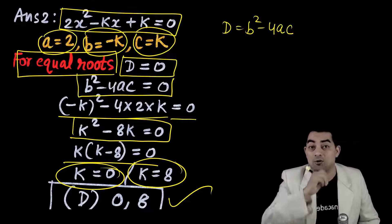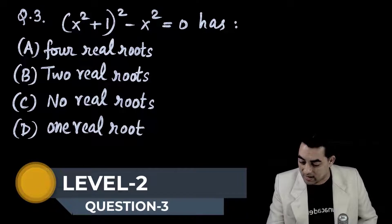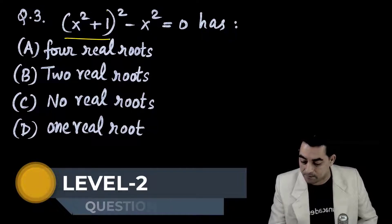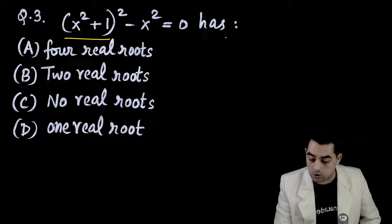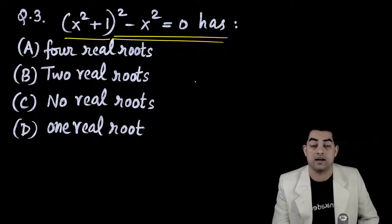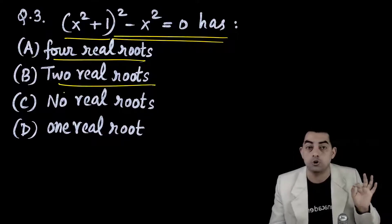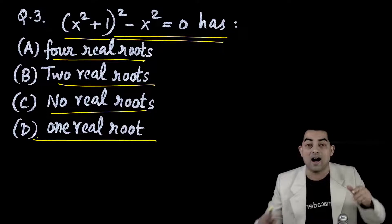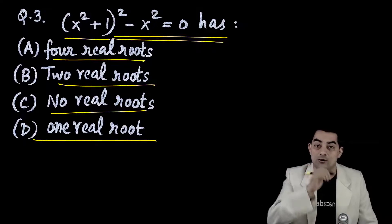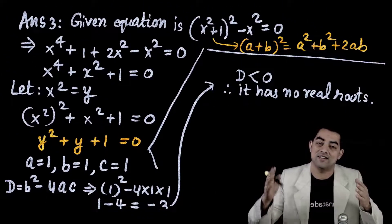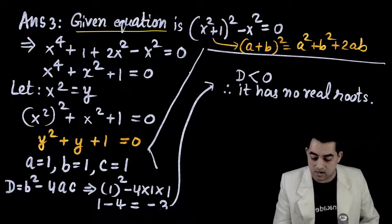Question number 3: the equation (x² + 1)² - x² = 0 — does it have 4 real roots, 2 real roots, no real roots, or one real root? Expanding using identity (a+b)² = a² + b² + 2ab: x⁴ + 1 + 2x² - x² = x⁴ + x² + 1 = 0. Let x² = y, so y² + y + 1 = 0.